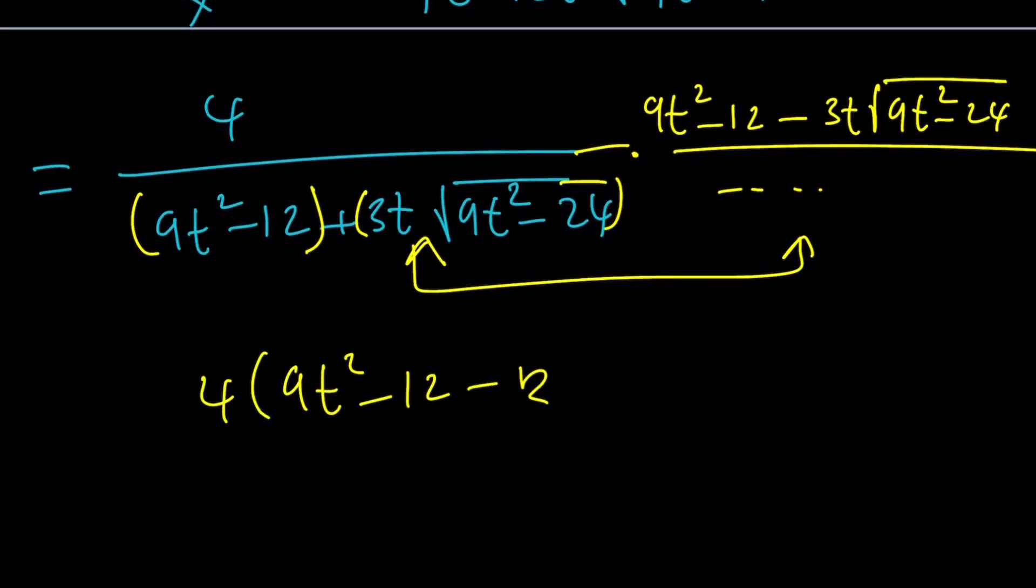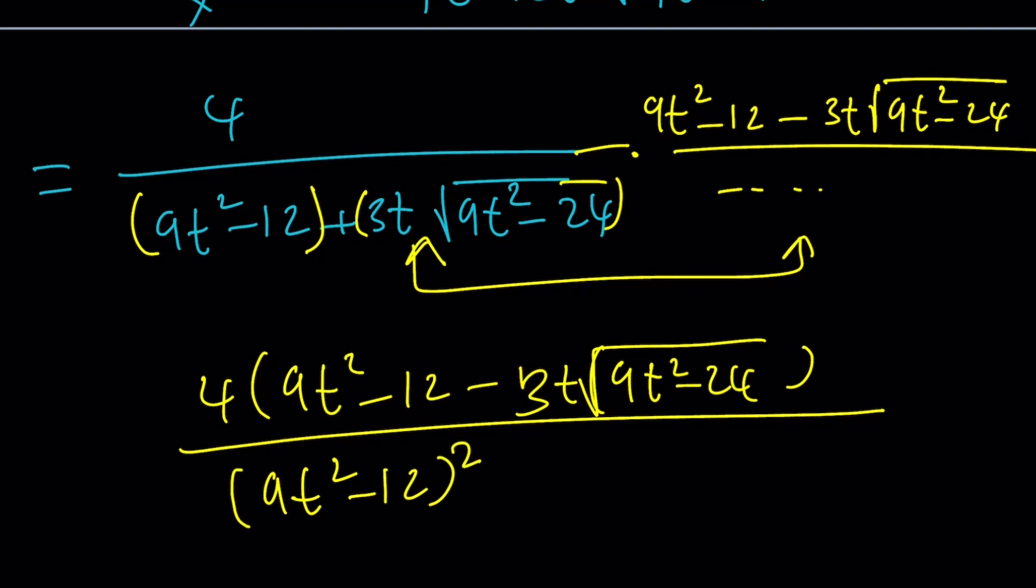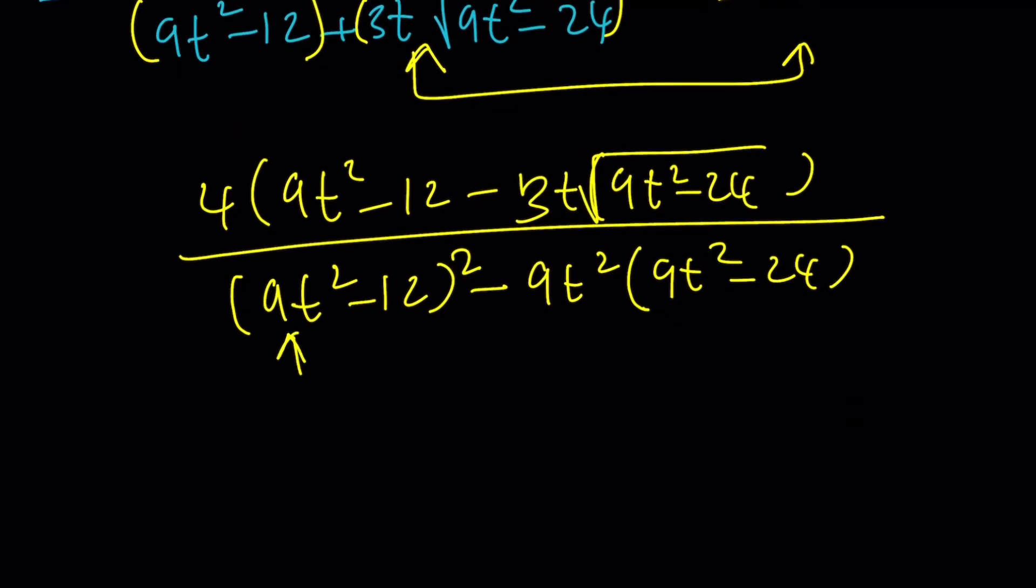And the bottom part is going to be the product of these two things, which is going to give me difference of two squares. This is the fun part, because you're going to be getting something like this. Okay. And then from here, notice that this is going to give you 81 t to the fourth. This is going to give you minus 81 t to the fourth. They're going to cancel out. And hopefully, more terms are going to combine and so on and so forth. And when you add the other term, you should be getting something real simple, right? That part is left as an exercise for you.